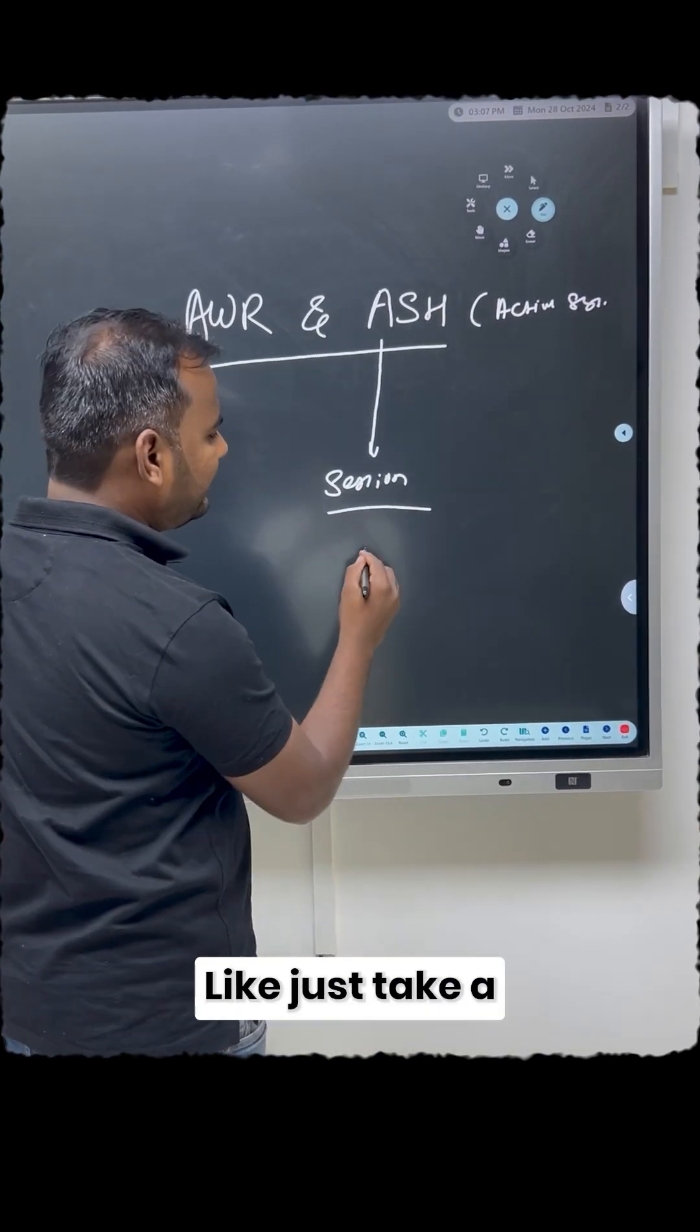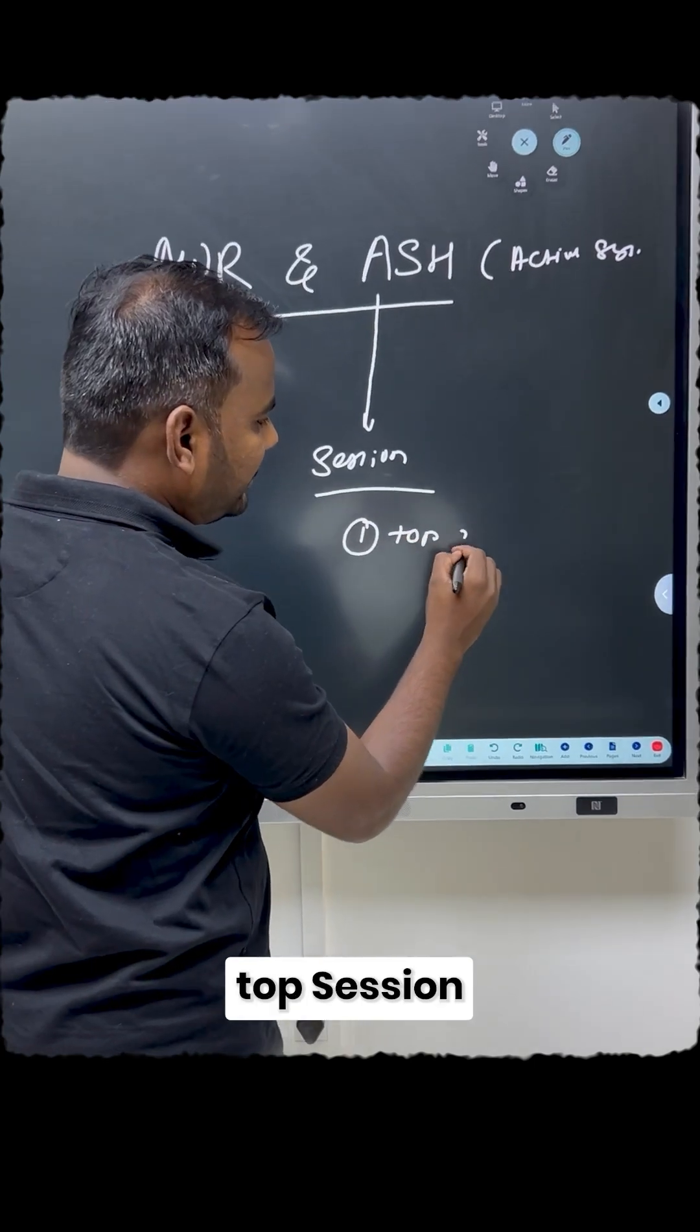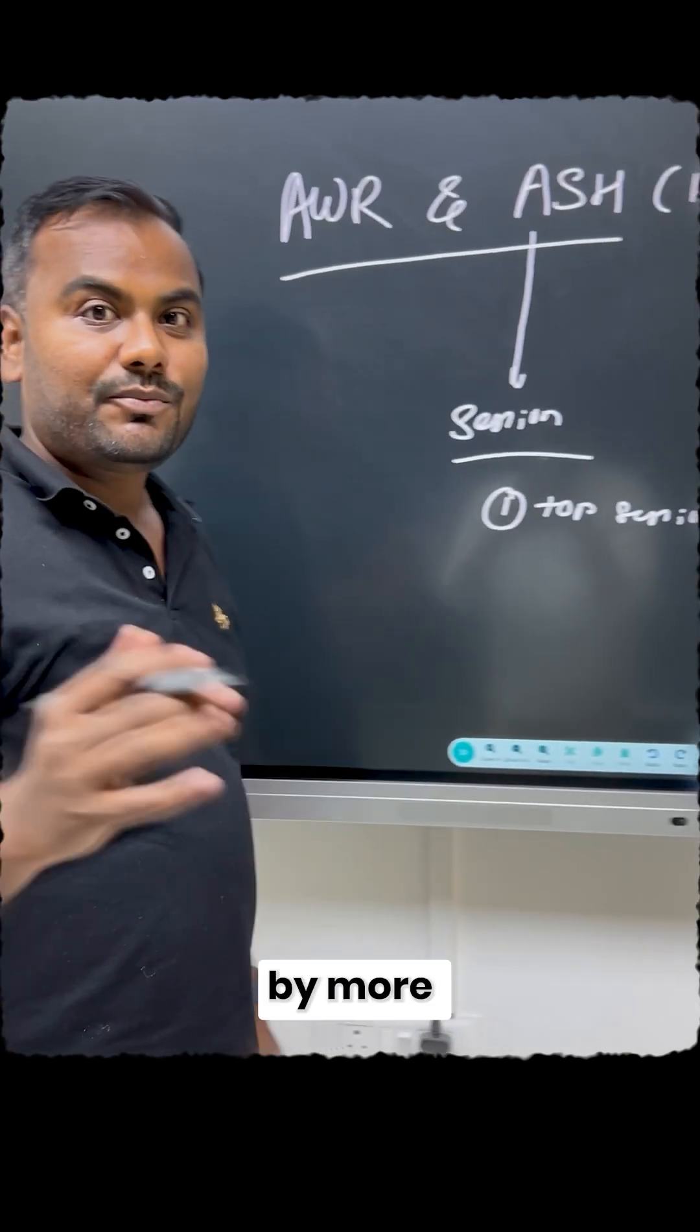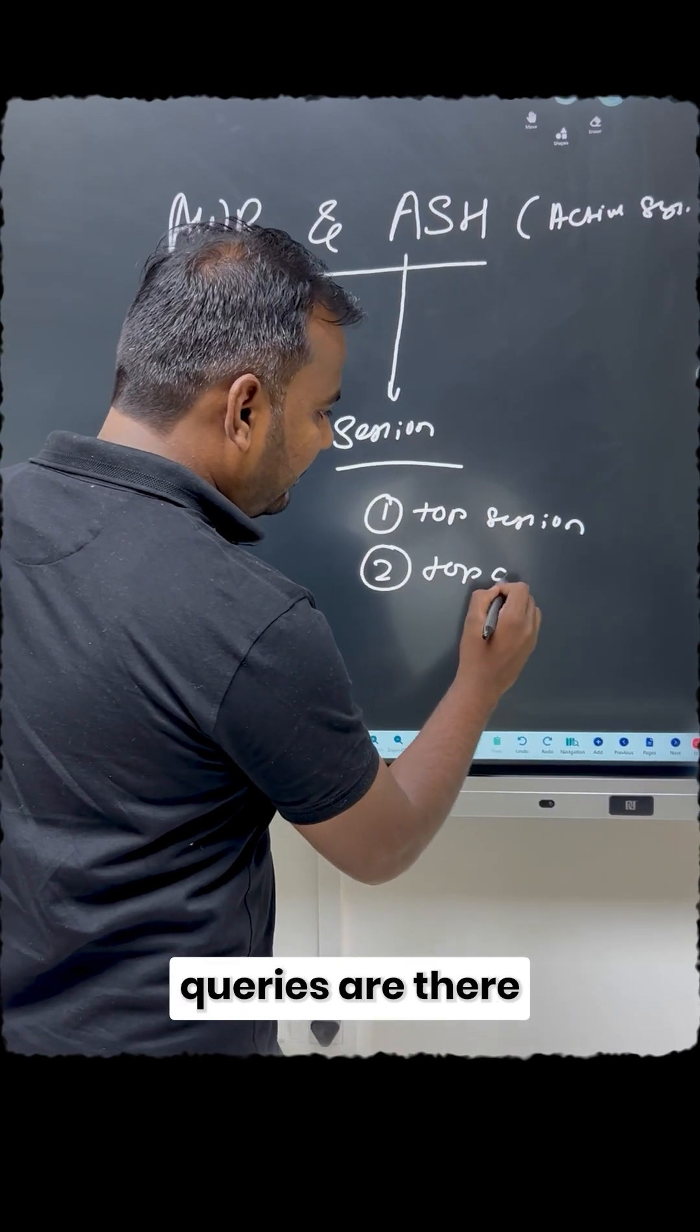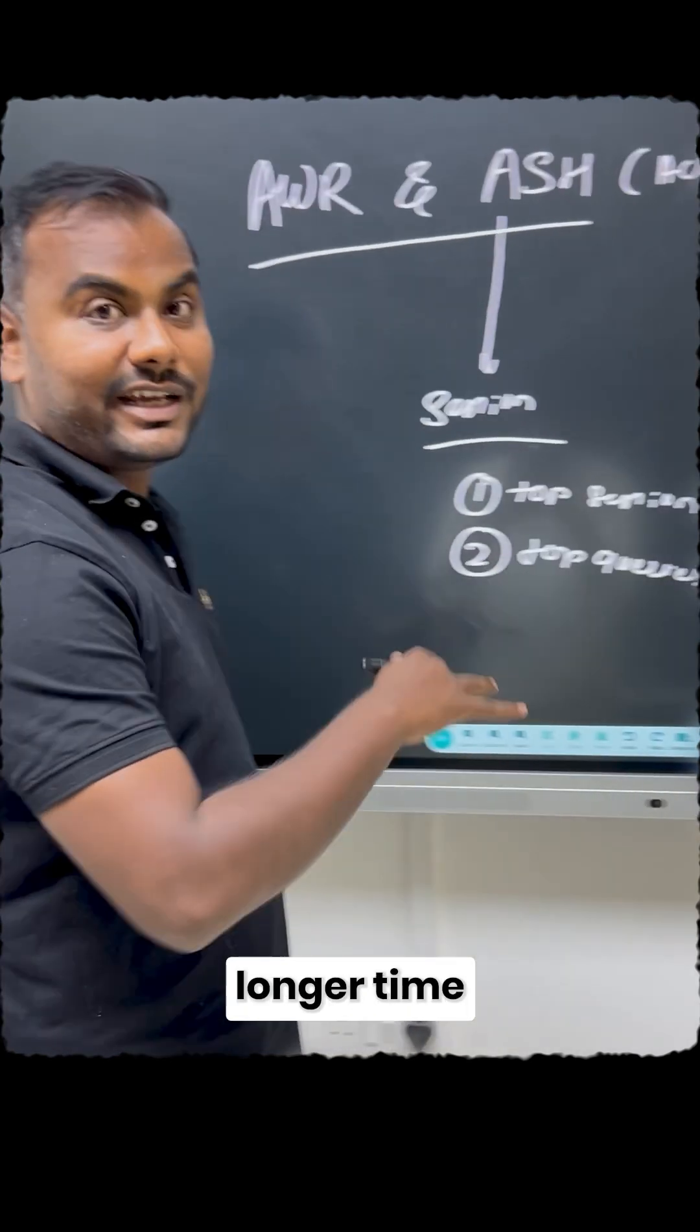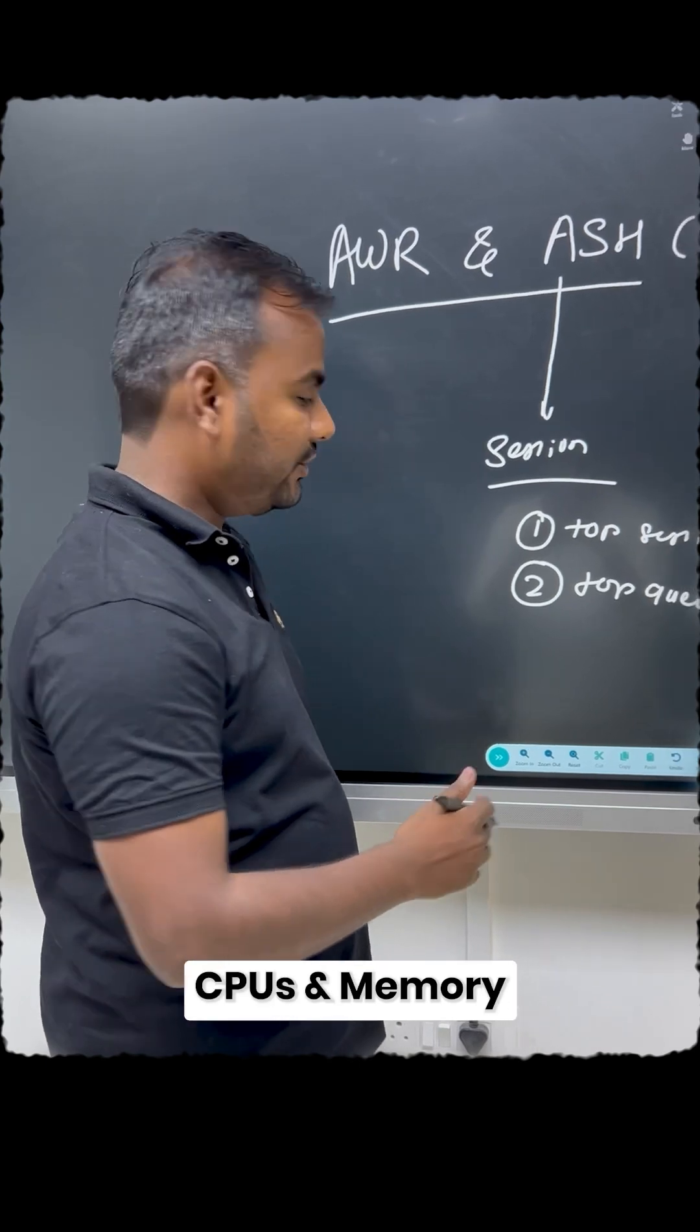What are the information that are there? Just take an example: what are the top sessions that are consuming more CPU and memory? What are the top queries that are running for a longer time and also consuming more CPUs and memory?